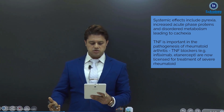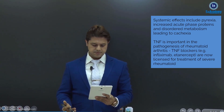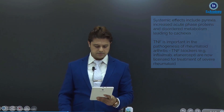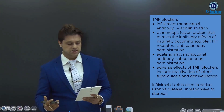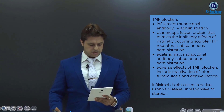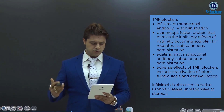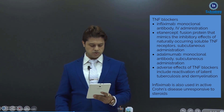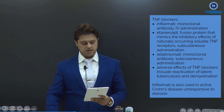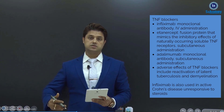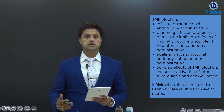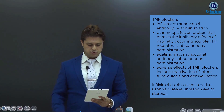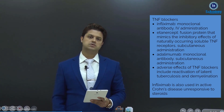TNF-alpha is important in the pathogenesis of rheumatoid arthritis. TNF-alpha blockers are now licensed for the treatment of severe rheumatoid arthritis. These blockers include infliximab, a monoclonal antibody given IV; etanercept, a fusion protein that mimics the inhibitory effects of naturally occurring soluble TNF receptors given subcutaneously; and adalimumab, a monoclonal antibody given subcutaneously. Adverse effects include reactivation of latent tuberculosis and demyelination. Infliximab is also used in active Crohn's disease unresponsive to steroids.